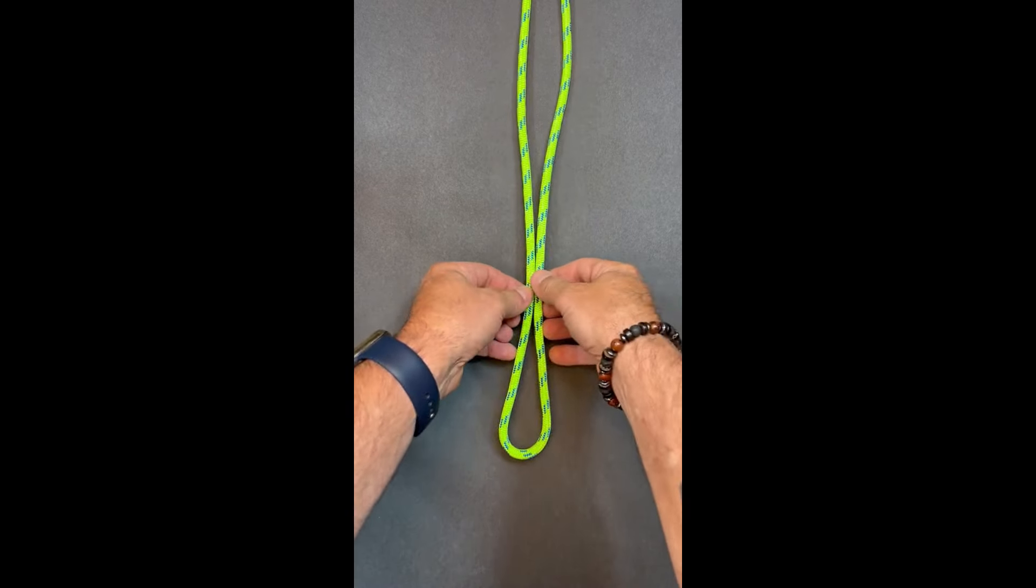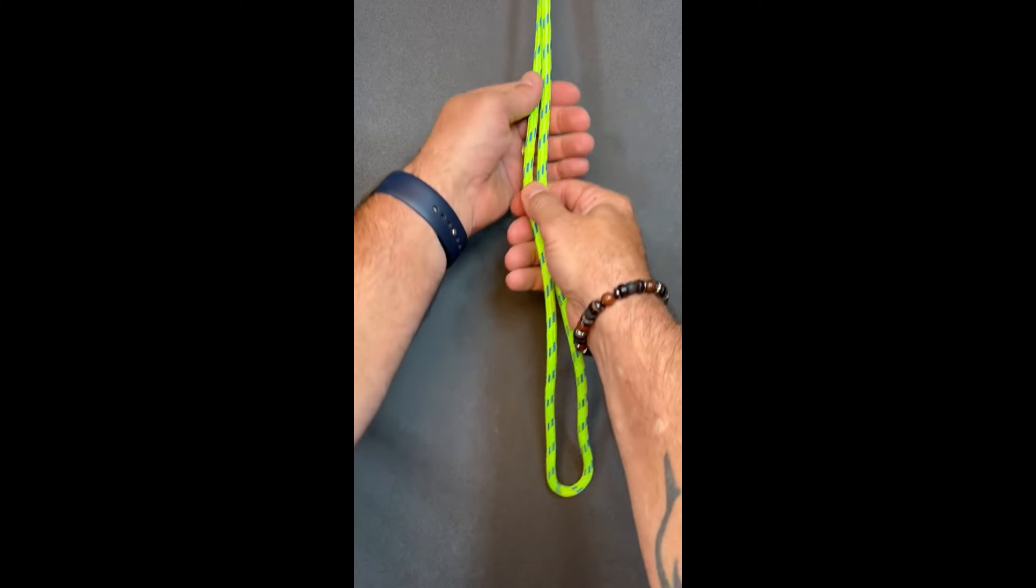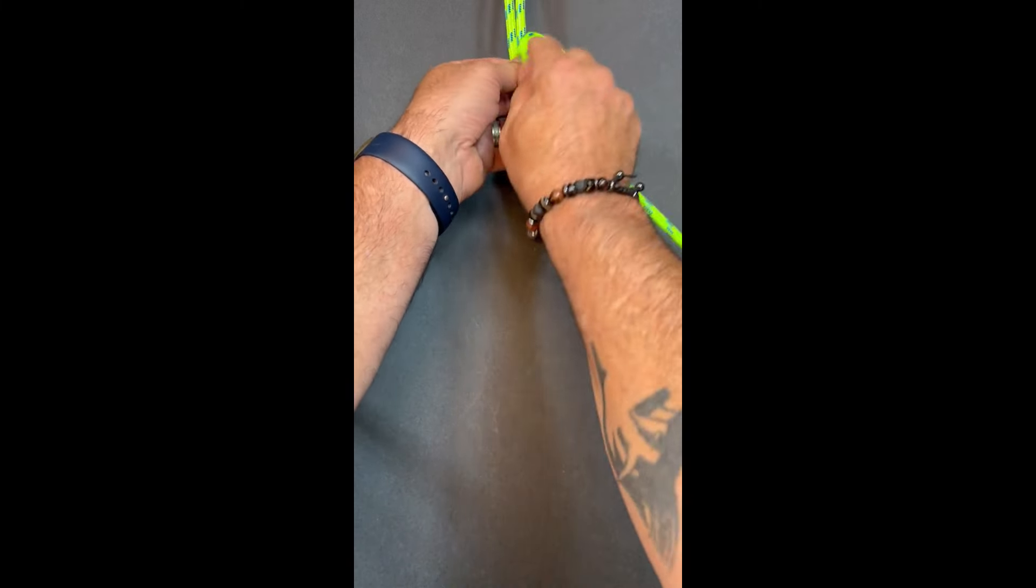The bowline on a bite. First we're going to get our bite of rope. Then we're going to create a loop.